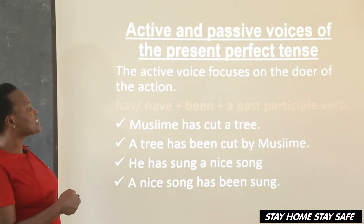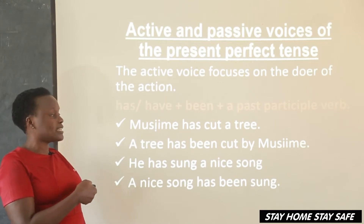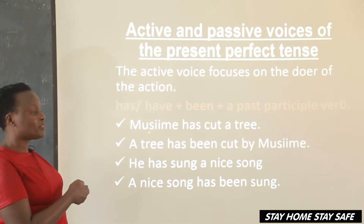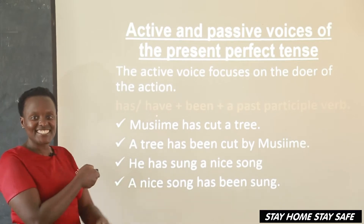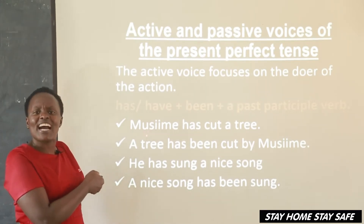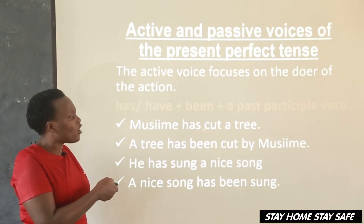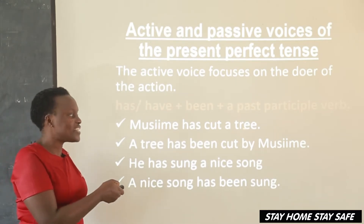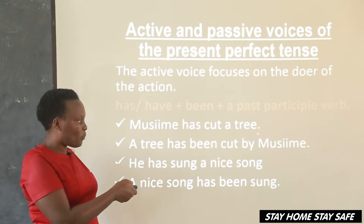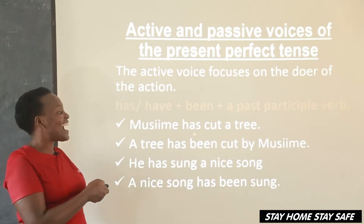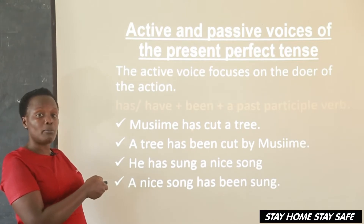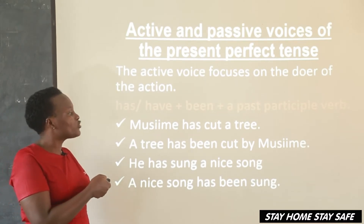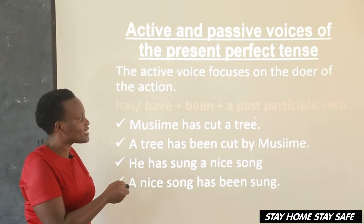For example: 'Musime has cut a tree.' Can you identify the three parts? Musime is the subject. A tree is the object. The verb is 'has cut,' which is a compound verb made up of the helping verb 'has' and the main verb 'cut.'